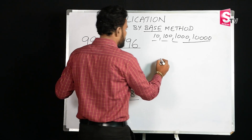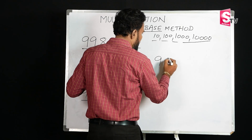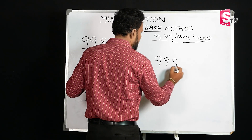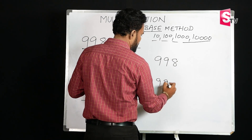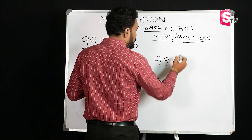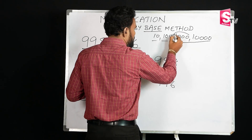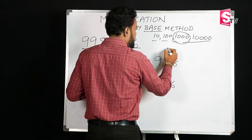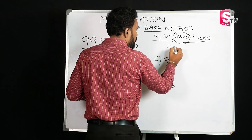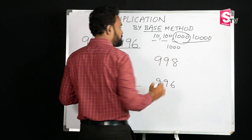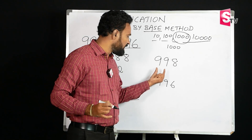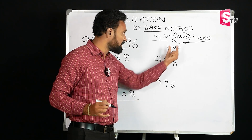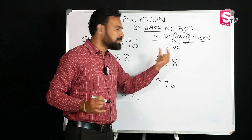For these two numbers — 998 and 996 — we identify the base. Since both numbers are close to 1000, we use 1000 as the base.